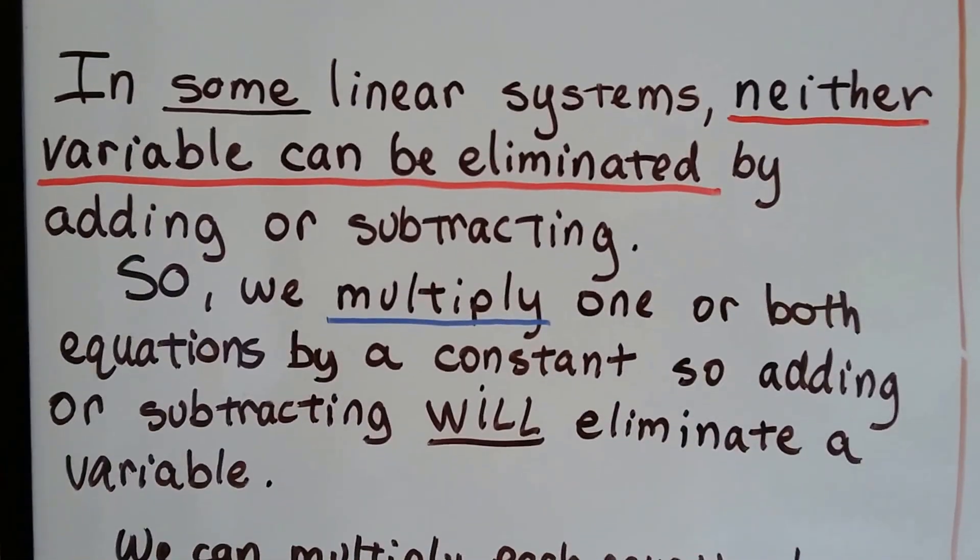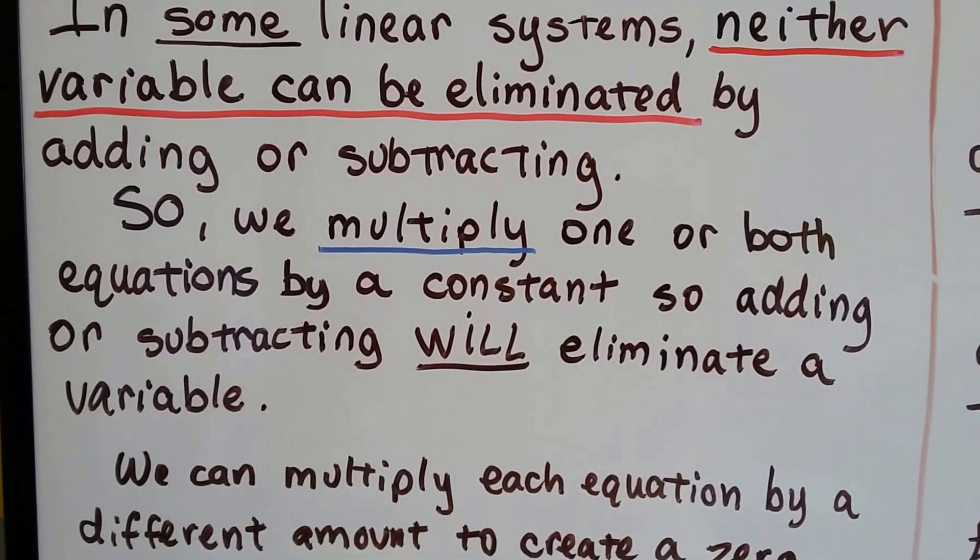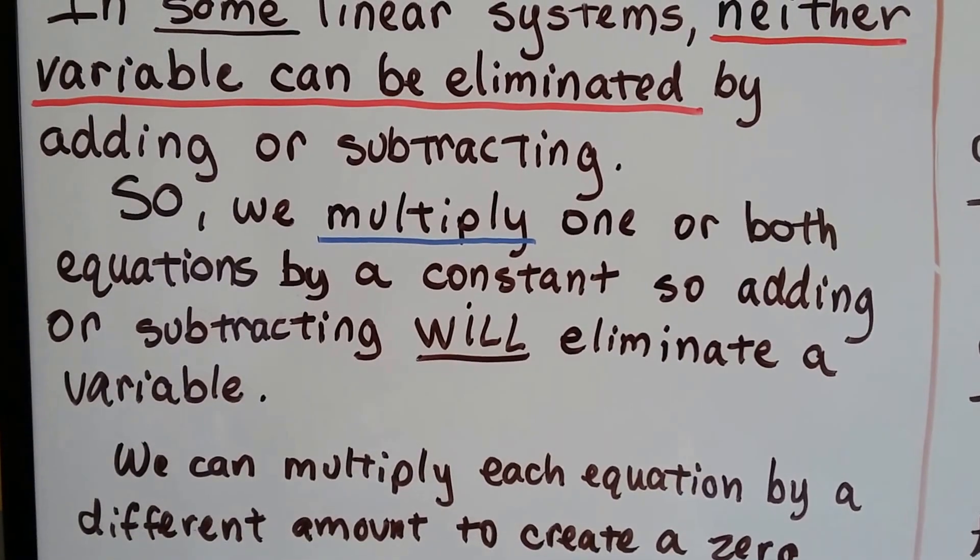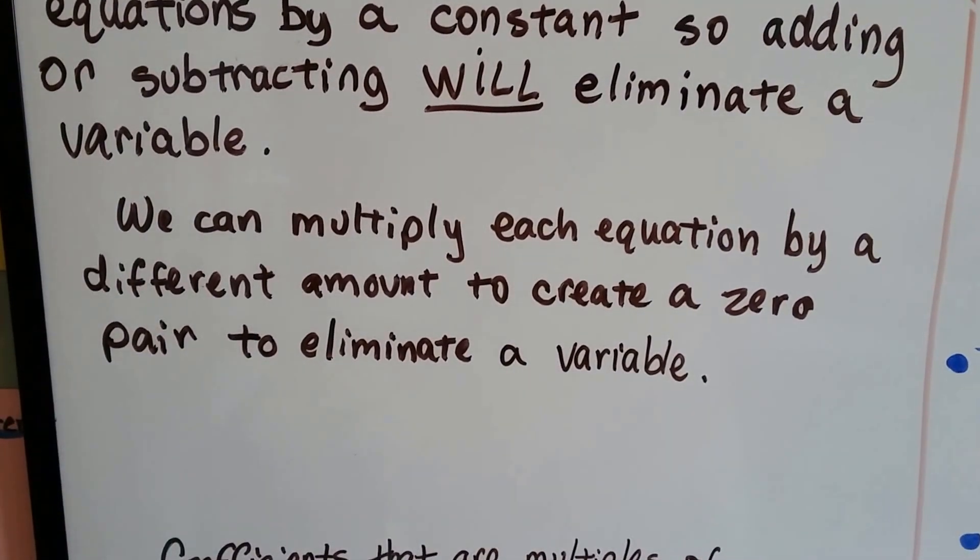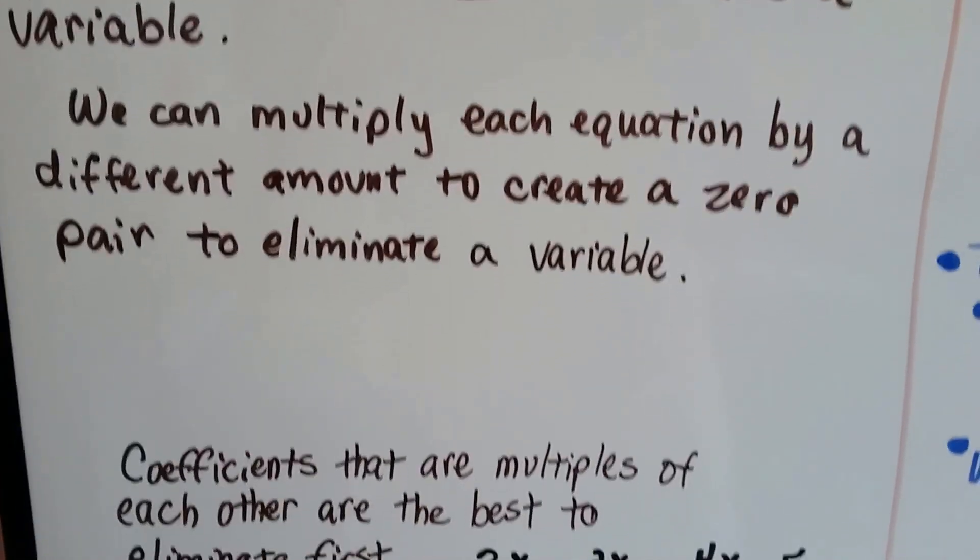As we said before, in some linear systems, neither variable can be eliminated by adding or subtracting. So we multiply one or both equations by a constant, so adding or subtracting will eliminate a variable. And we can multiply each equation by a different amount to create a zero pair to eliminate a variable.